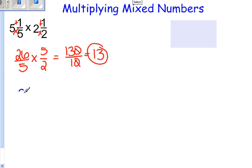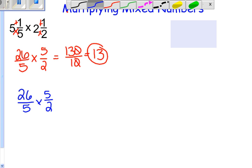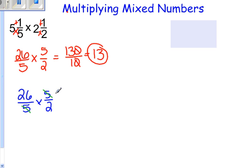Now if you've practiced cross-simplifying, we could do 26 over 5 times 5 over 2, and then simplify across. 5 and 5 can both be divided by 5. 5 divided by 5 is 1. 5 divided by 5 is 1.